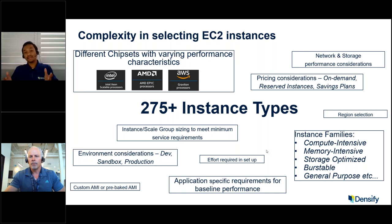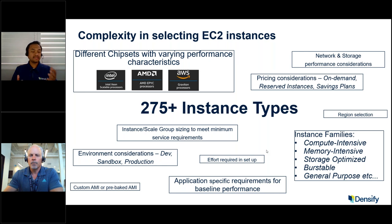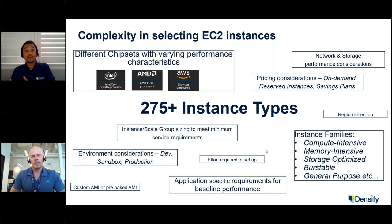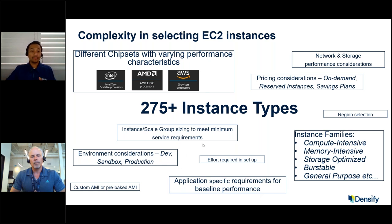Should I go with Intel? Should I go with the AMD EPYC chipsets? Or most recently, AWS announced the Graviton chipset — manufactured alongside Annapurna Labs. So whether you want to go with those ARM processors or x86 versus ARM processors, other things that developers and app owners consider are the actual instance families. AWS has about nine different instance families. I've listed the five most common ones: compute intensive, memory intensive, storage optimized, burstable performance, or general purpose.